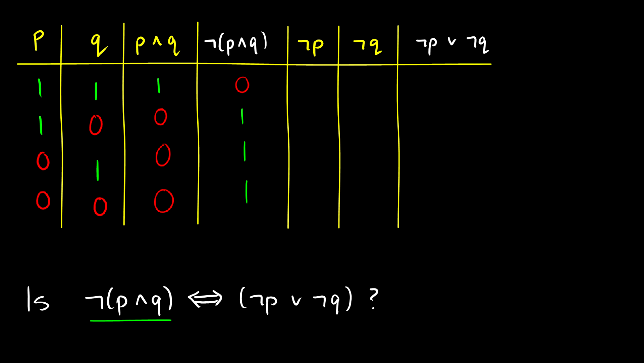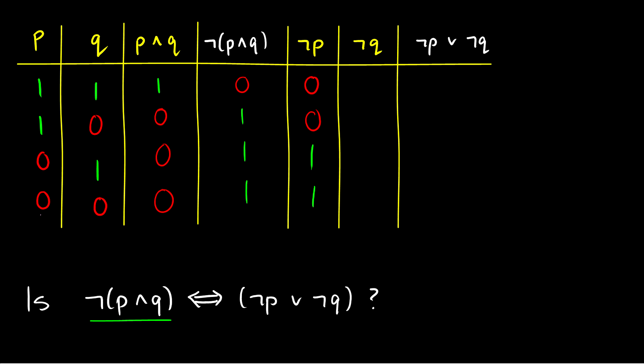Now we have to evaluate ¬P∨¬Q. To do that, we first need ¬P and then ¬Q, then combine them with OR. ¬P is just the opposite values of P: if P is 1, 1, 0, 0 then ¬P is 0, 0, 1, 1. Similarly, ¬Q reverses Q: instead of 1, 0, 1, 0, we get 0, 1, 0, 1.